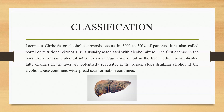Looking at the classification or etiological factors, the first is Laennec's cirrhosis or alcoholic cirrhosis, which occurs in 30% to 50% of patients. It is also called portal or nutritional cirrhosis and is usually associated with alcohol abuse. The first change in the liver from excessive alcohol intake is an accumulation of fat in the liver cells.